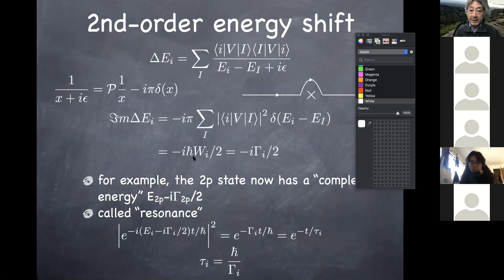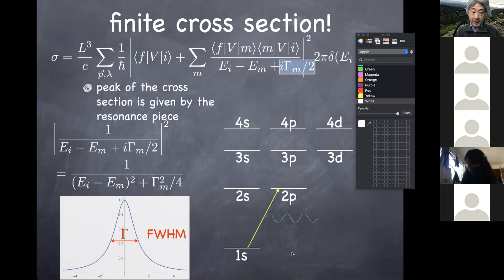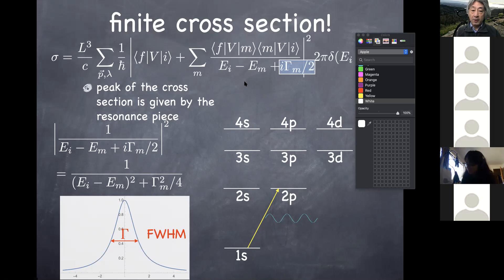The imaginary part of the energy of the 2p state turns out to be exactly the decay rate times h-bar over 2, which is the same thing as you'd expect from the exponential decay law by identifying that tau is the inverse of w, and therefore h-bar over gamma, where gamma is the width of what we now call the resonance. Any state that decays ends up having a slightly blurred energy level given by this width gamma, so width is h-bar over the lifetime of that state. This is the width that goes into the formula for the cross-section, so the cross-section remains finite even when you hit exactly the energy difference between 1s and 2p states.